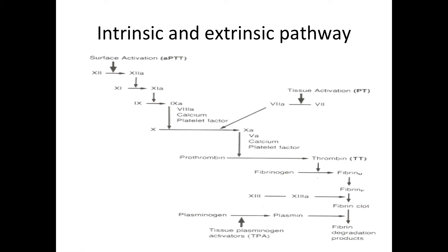Welcome back. In the previous video we spoke about how to form the primary hemostatic plug. Now let's see how the secondary, more stable hemostatic plug is formed — this will be by clotting cascades. The clotting factors are formed by the liver and also found in some other cells such as platelets.